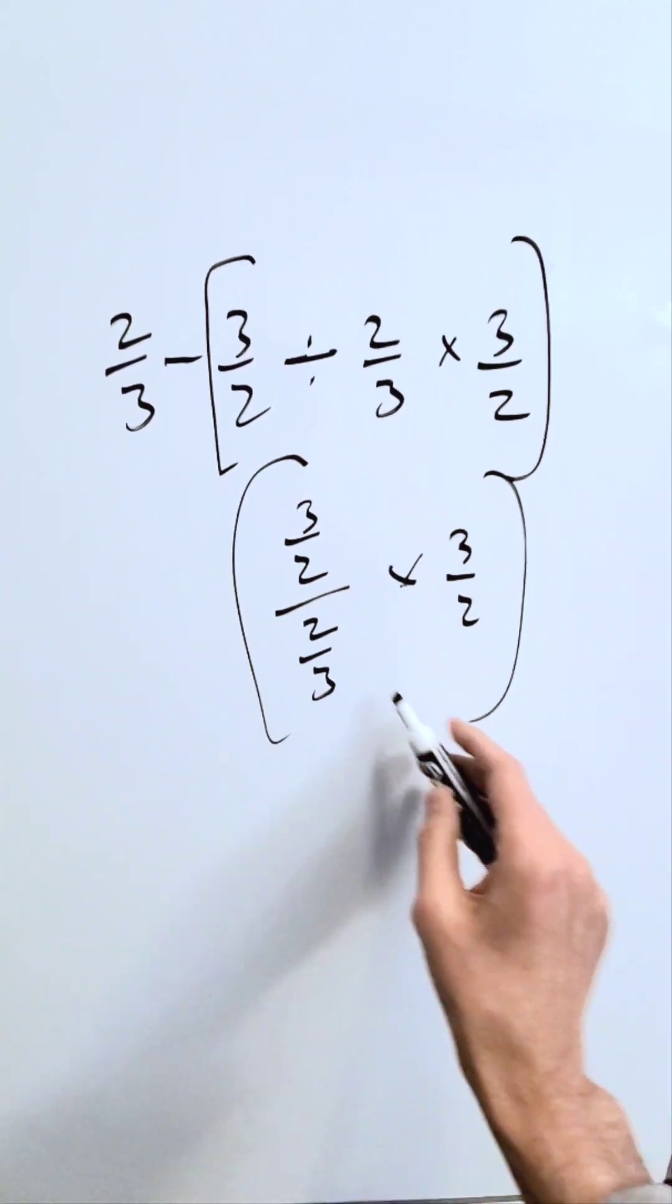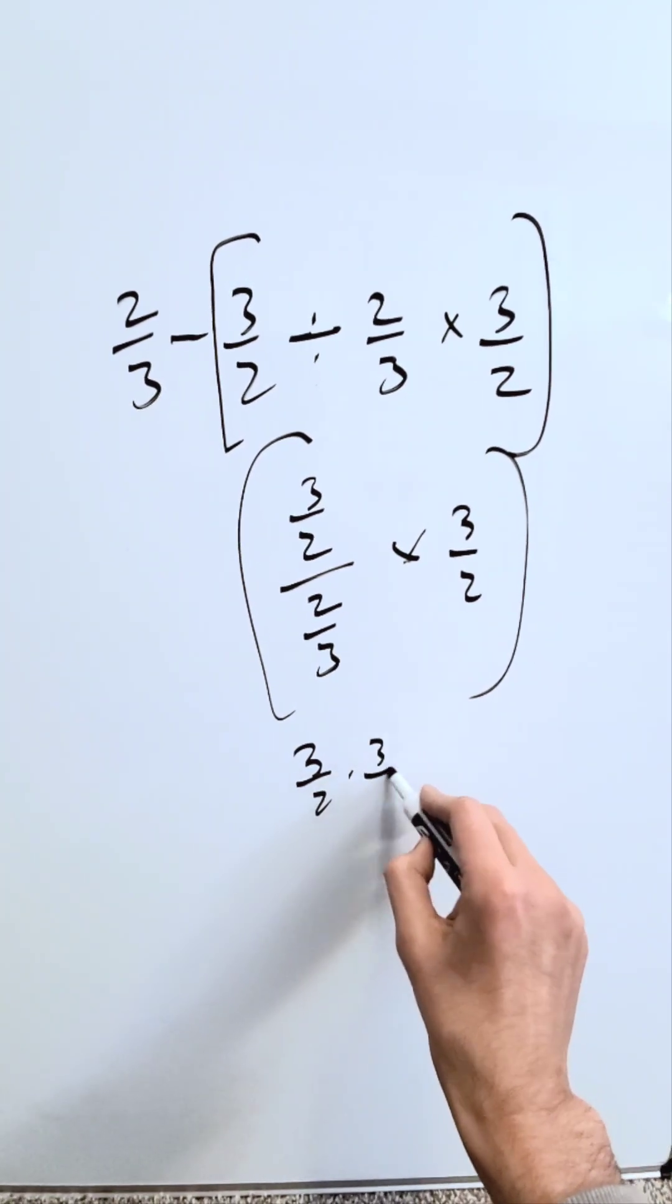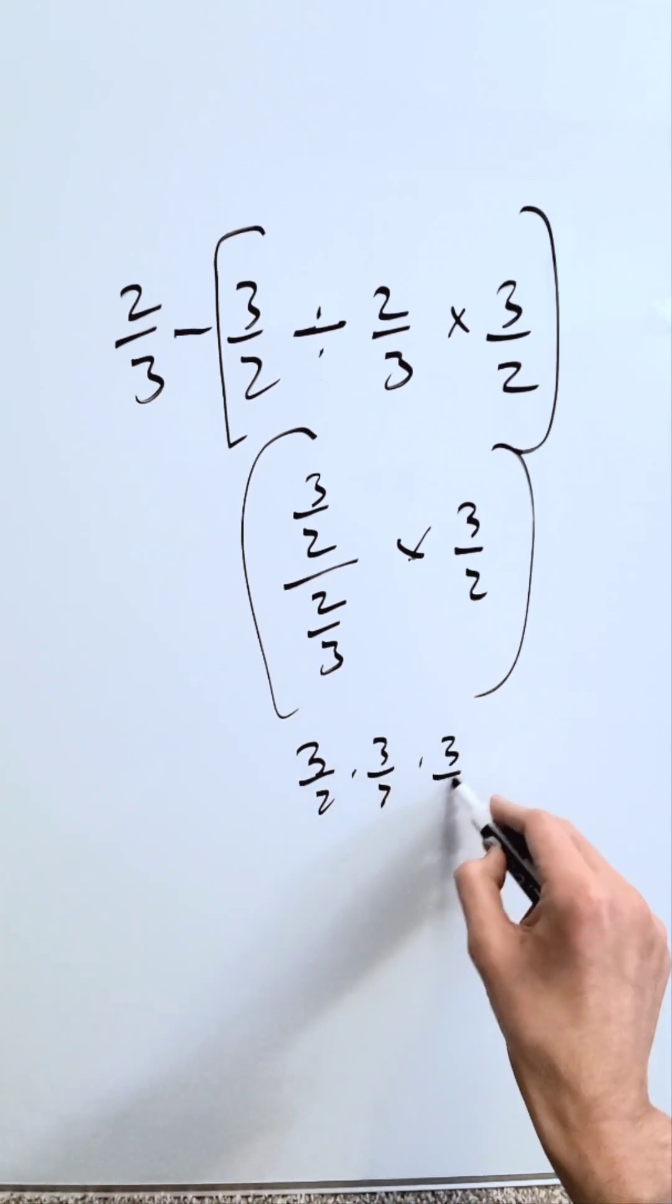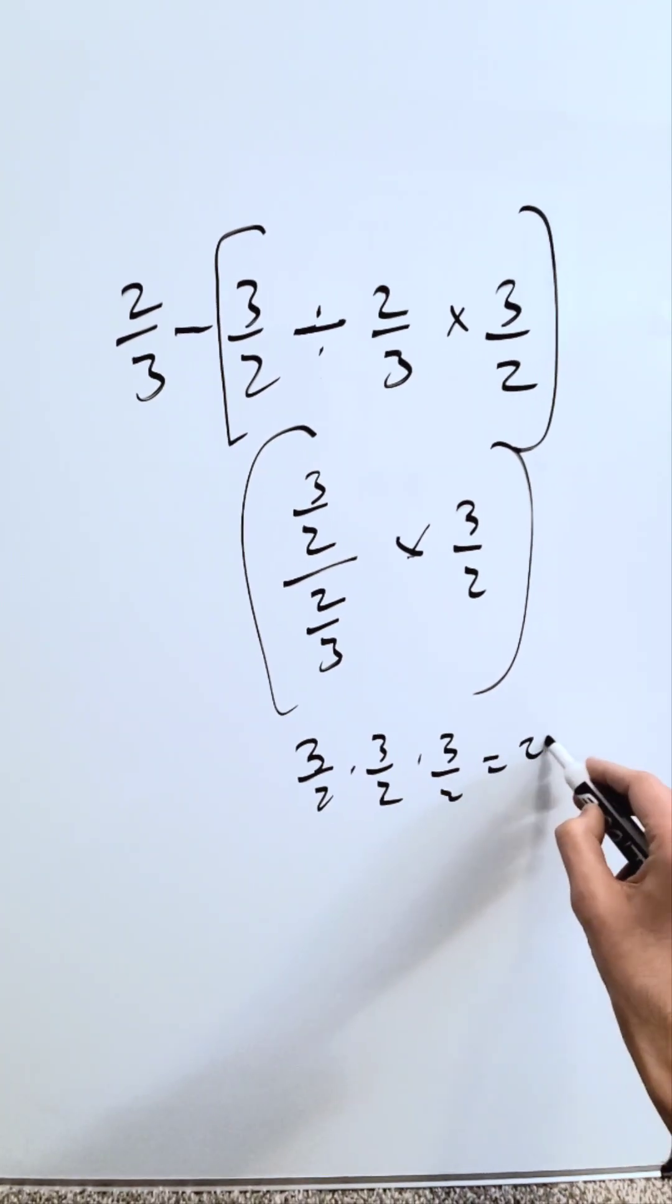Compute this part right over here. You will have here 3 over 2 times 3 over 2. This flips around times 3 over 2. You are looking over here at 27 over 8.